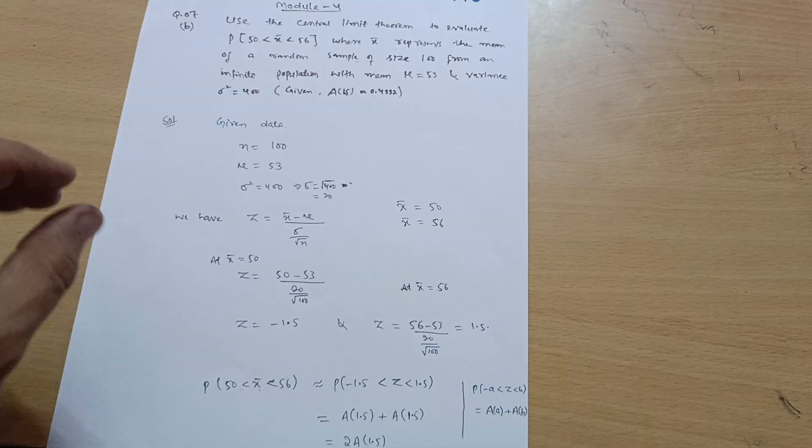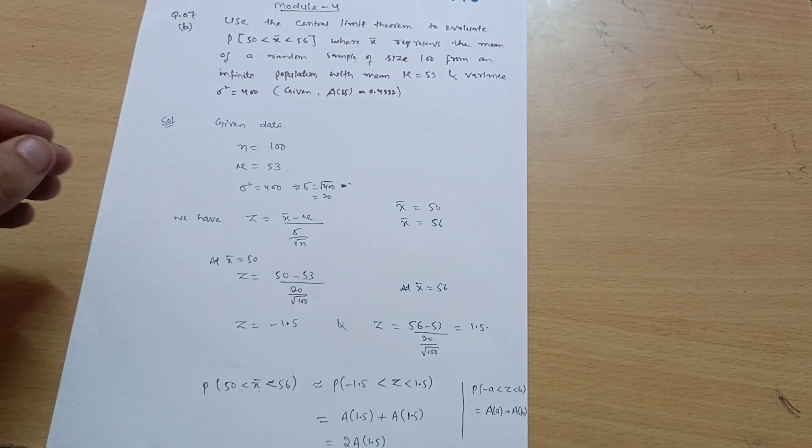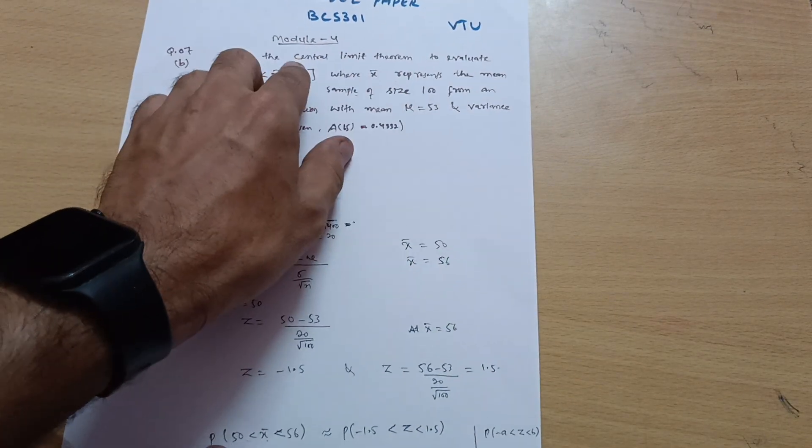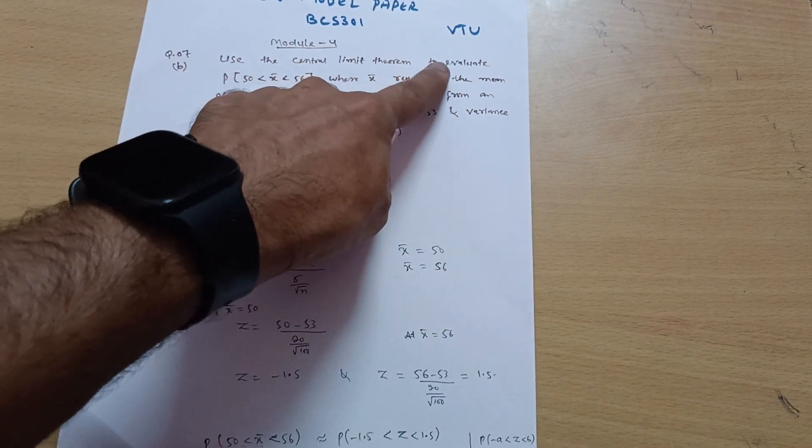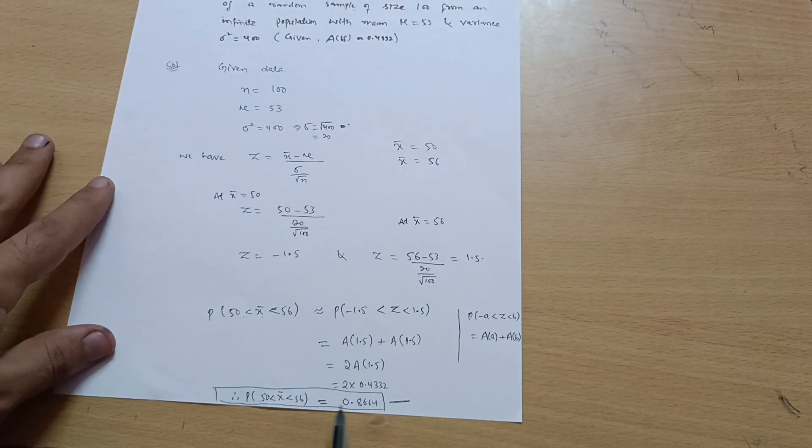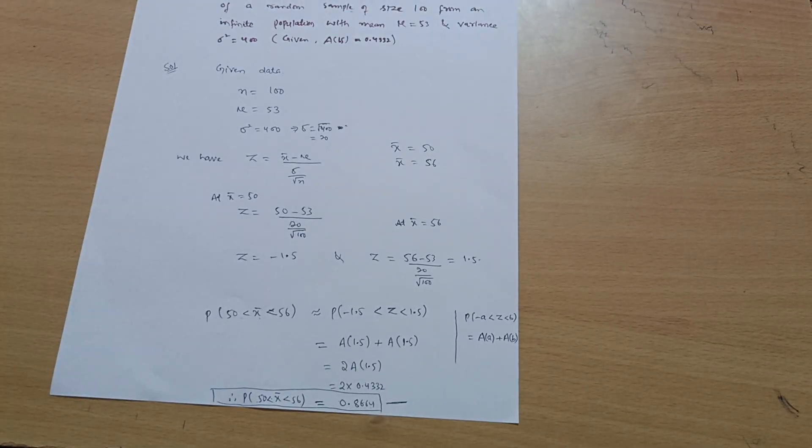Very simple. The only thing is you should use the formulas very well. So this is the evaluation using the central limit theorem to evaluate P(X̄ > 50 < 56). We have calculated this value. I hope this is clear to you people. Thank you.